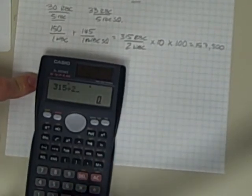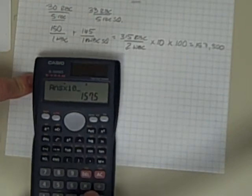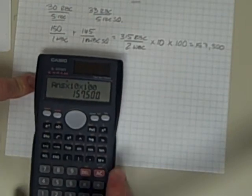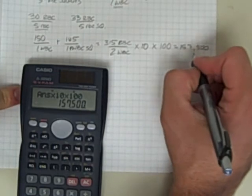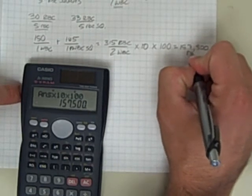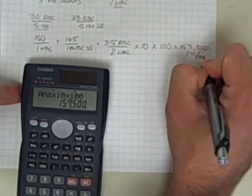Just double checking—so 157,500 red blood cells per millimeter cubed.